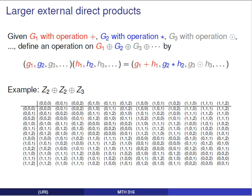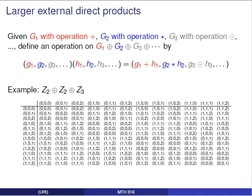The direct product can be used with more than just two groups. With three or more groups, it works the same way: combine elements entry-wise using each group's corresponding operation. Here's an example of what the Cayley table would look like for Z2 ⊕ Z2 ⊕ Z3. It's a lot to look at, but you can do this.